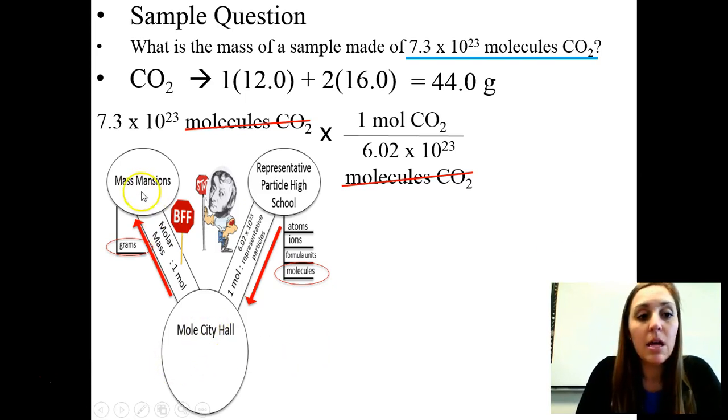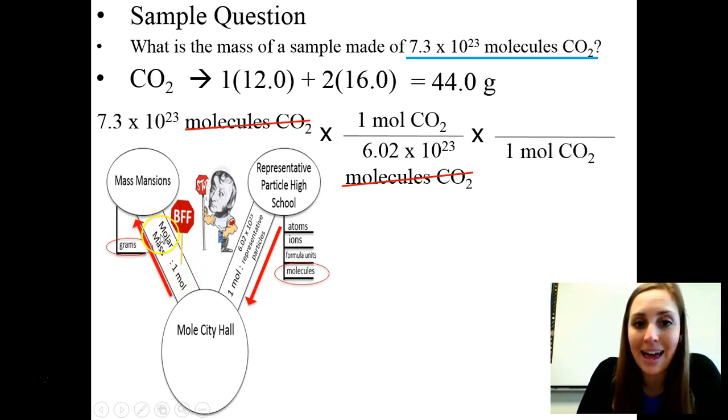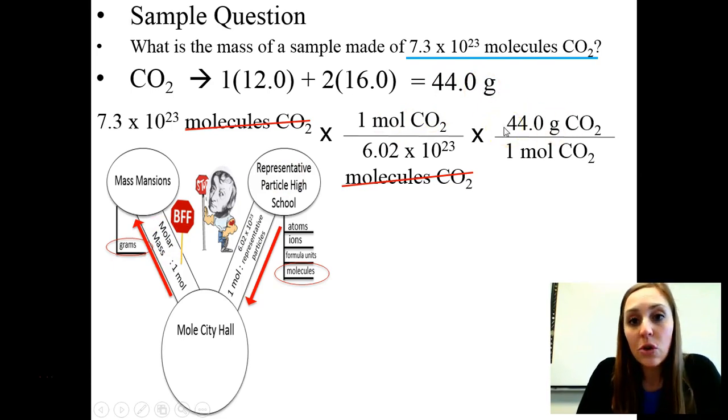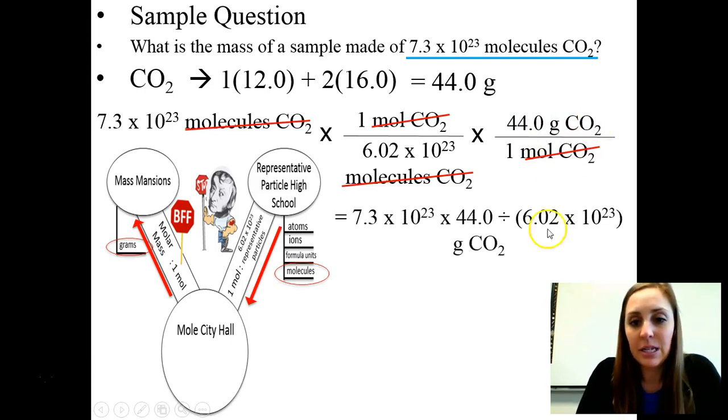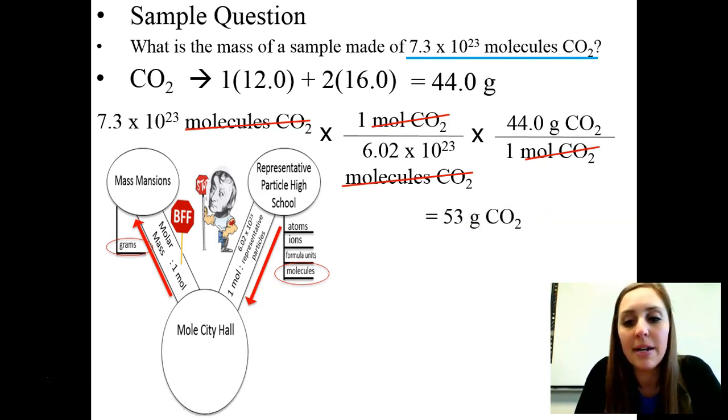So now that we have that canceled and we're in moles, we have to travel from Mole City Hall to mass mansions. So here's our unit converter. Whenever we travel a road, we do an x line. The first thing you hit goes on the bottom. So for every one mole of carbon dioxide, you have the molar mass of carbon dioxide. We found that to be 44 grams of carbon dioxide. Cancel unit and formulas that are the same. And now we're left with just numbers and one unit, which is the grams of carbon dioxide. Do the math. Multiply by things on the top, divide by anything on the bottom, grams of CO2, and that'll get you 53 grams of carbon dioxide.